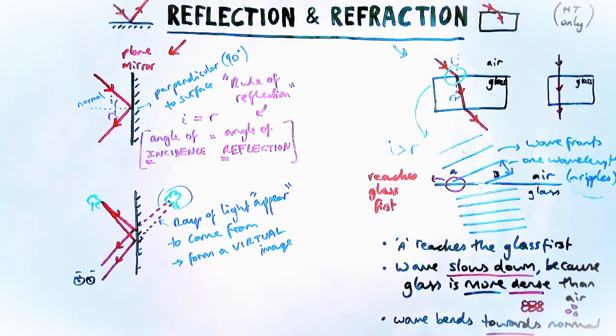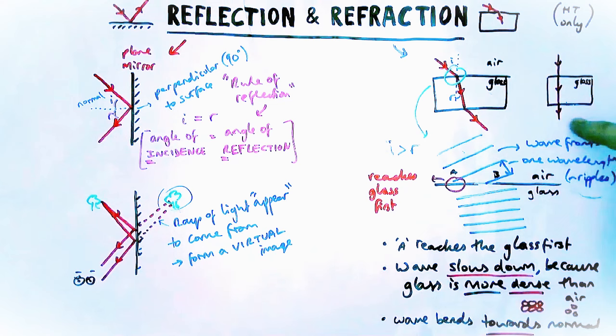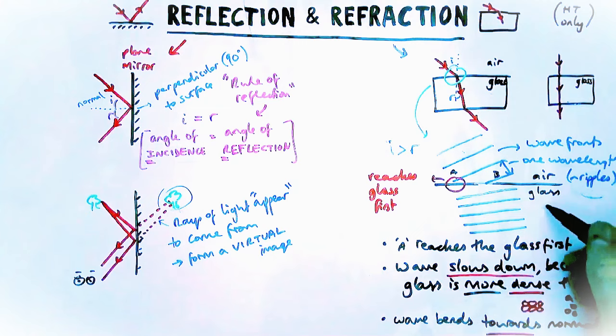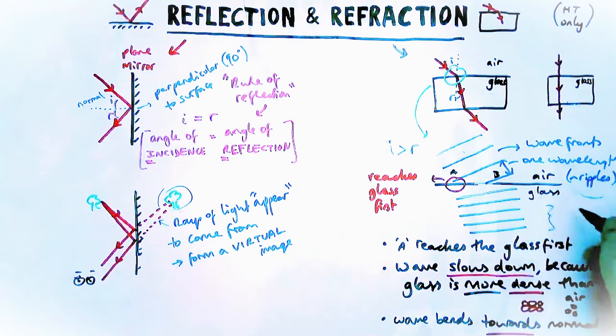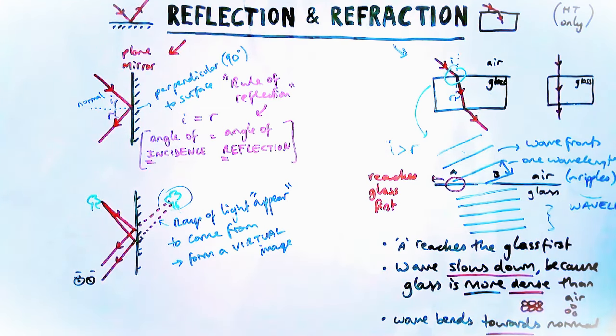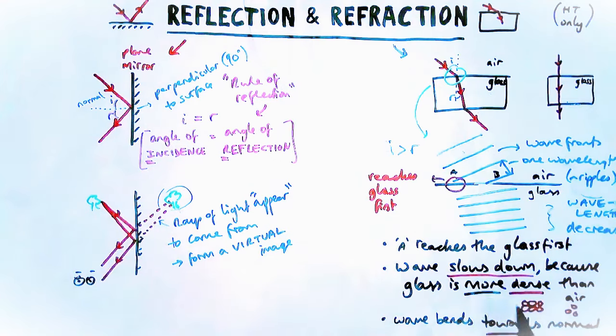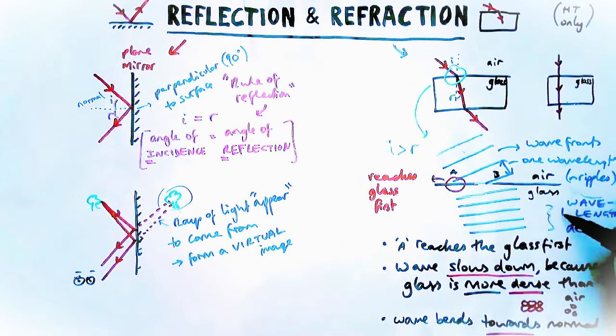Now when we are drawing it going straight on into glass, the same effect would happen but it wouldn't bend. But you'll notice that the wavelengths have become close together. Wave fronts have become close together. That shows us that the wavelength has decreased overall. So the speed has decreased and the wavelength has decreased when it's gone to a more dense medium.